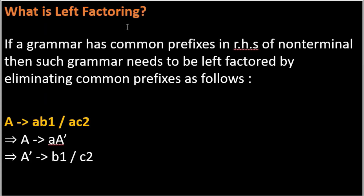Moving to left factoring. Given a grammar A → aB1 | aC2, we can see that both productions have the common symbol 'a' on the left. This means the grammar contains left factoring, and we can factor out 'a'. To remove left factoring, we rewrite it as: A → aA′ and A′ → B1 | C2. By combining these two productions we get back the original grammar, so this step removes left factoring.